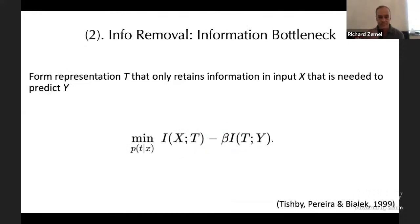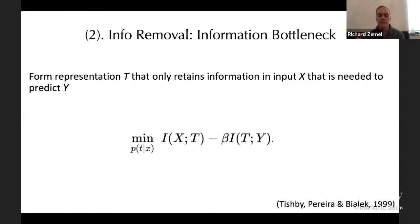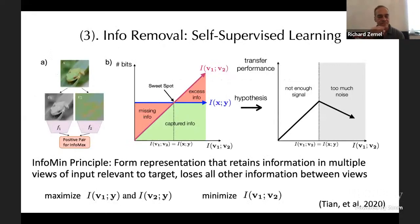Another example is the information bottleneck. The idea is to learn some representation T that minimizes mutual information between T and input X, while maximizing the information T contains about target Y. So you're extracting only the information about X that's relevant to Y and removing all other irrelevant information from X.